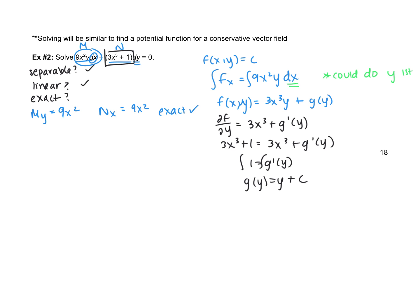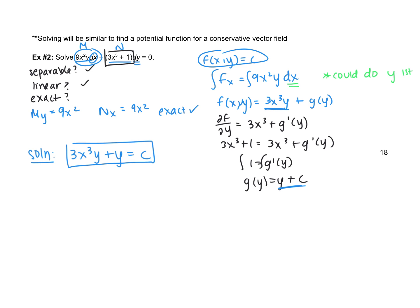So g(y) is just y plus c. Our solution is of the form f(x, y) = c. We have the term 3x³y plus the term y, so we get 3x³y + y = c. You do not need c on both sides — if you imagine that c being on the left side, we have a constant on the right, so you're just moving it over.